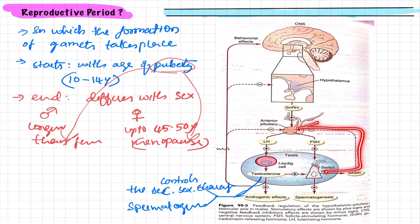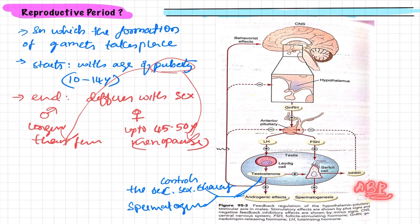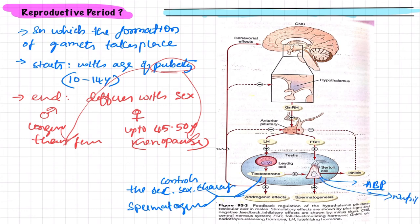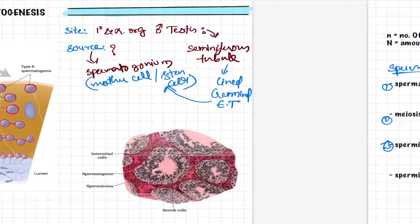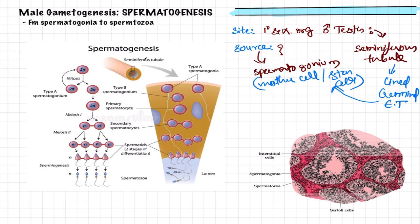Apart from inhibin, Sertoli cells also release androgen-binding protein (ABP). Sertoli cells also have a nutritive function for the developing spermatozoa.